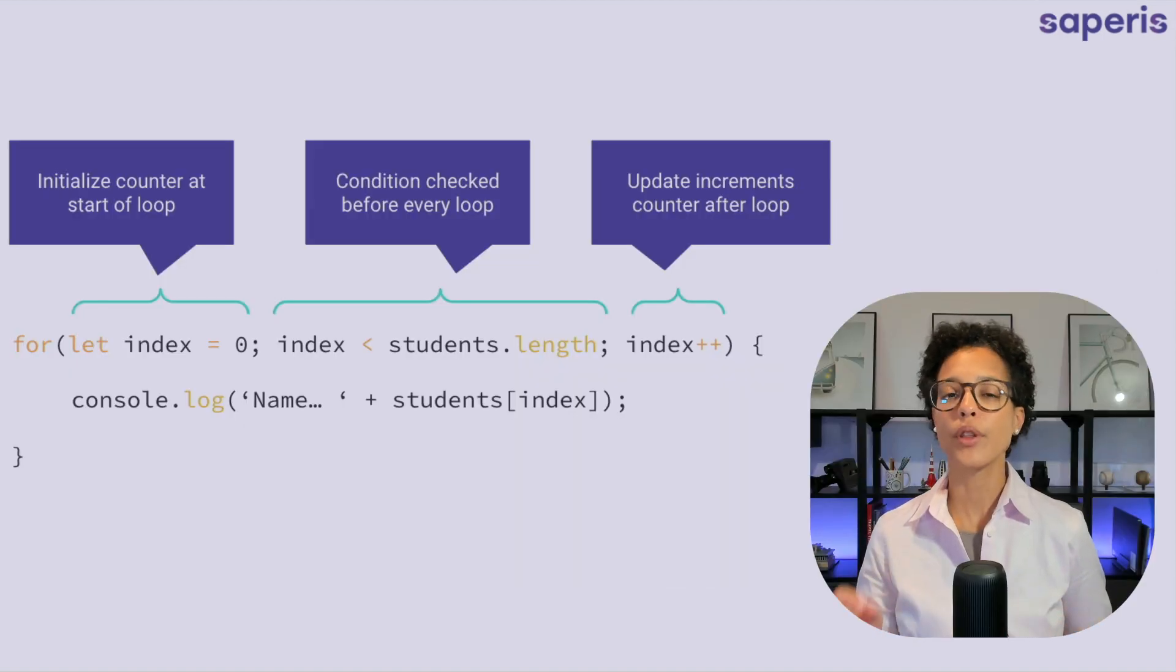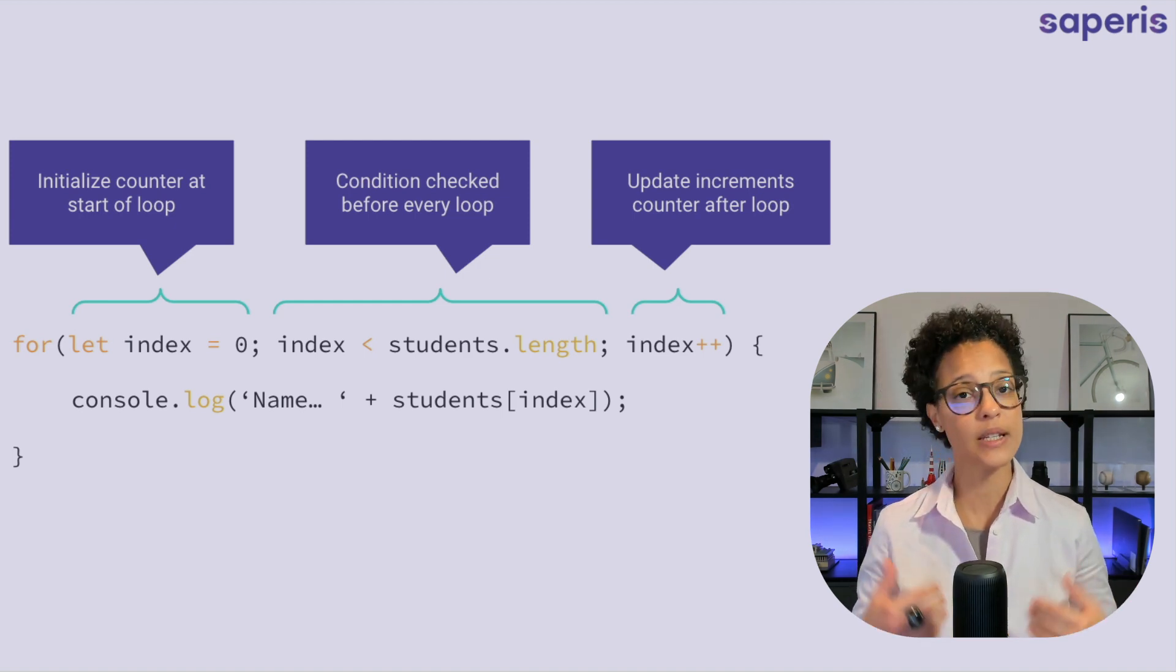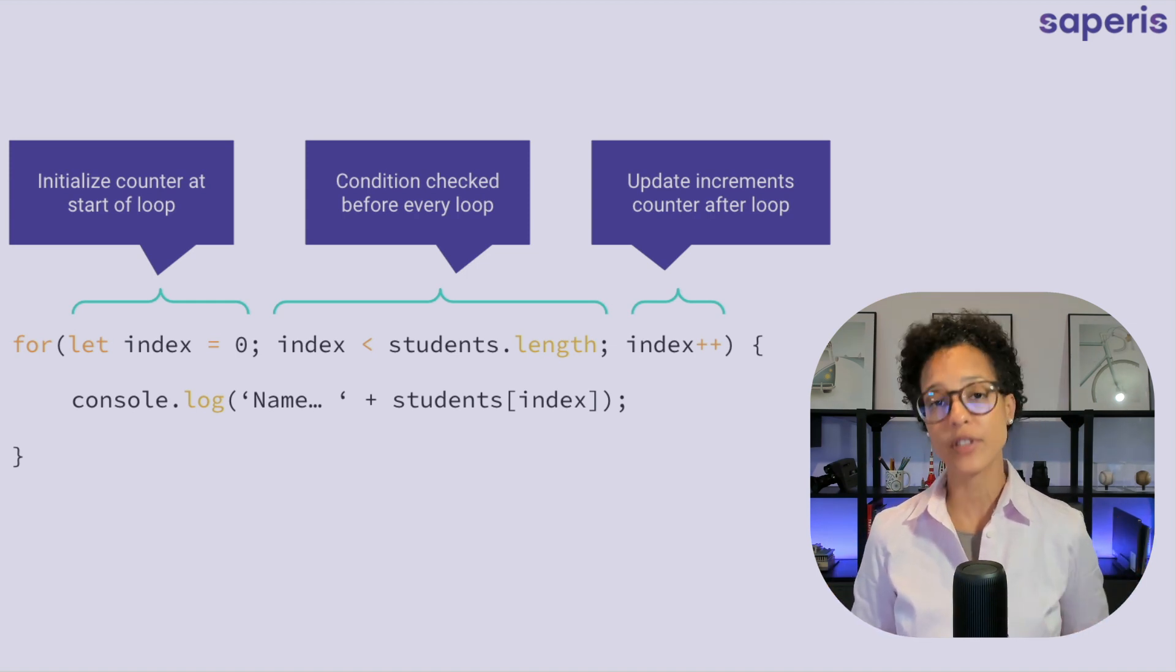After starting with the for keyword the first element within our parenthesis is our counter and this we initialize at zero because as you probably know by now an array has an index of zero so we start with zero index. That is obviously if you want to start with the first element in the array.